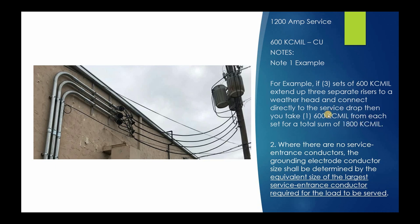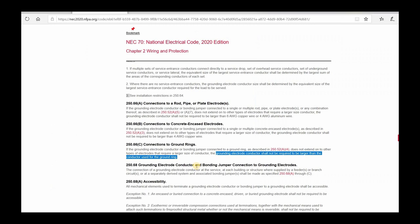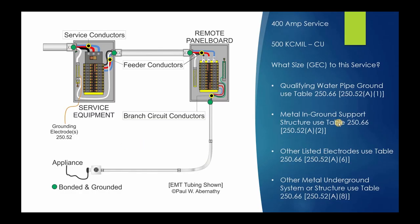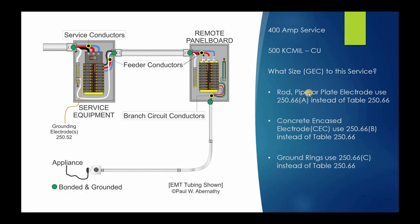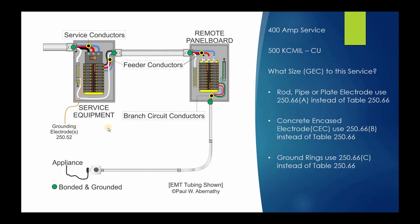Once you have 1800 kcmil, if you're dealing with one of the Table 250.66 electrode types, you simply go to the table. Over 1100 kcmil requires 3/0 copper or 250 kcmil aluminum grounding electrode conductor. If instead it's a rod, pipe, plate, concrete encased electrode, or ground ring, then it only needs to be what's prescribed in (A), (B), or (C). So yes — even a 1200 amp service with ground rods would only require a 6 AWG copper grounding electrode conductor. That's the allowance of using (A), (B), and (C).